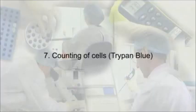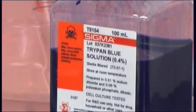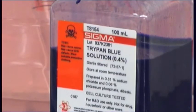Section 7: Counting of cells using trypan blue dye exclusion. There are many methods available for determining cell counts. However, trypan blue dye exclusion is a readily available, inexpensive, rapid and simple technique.